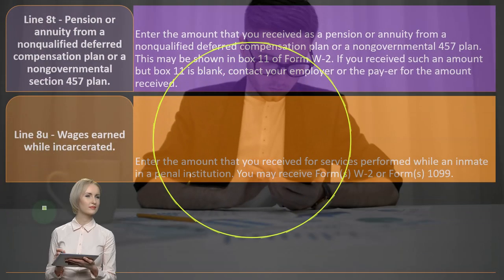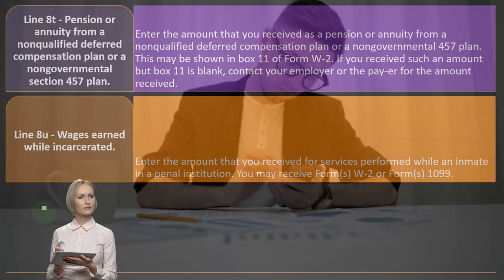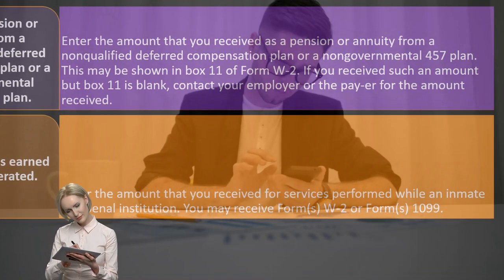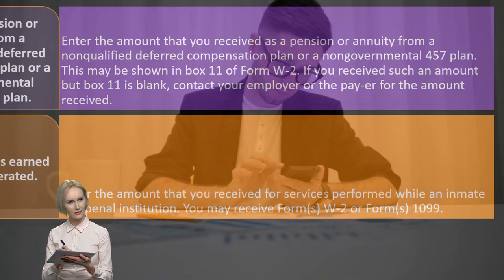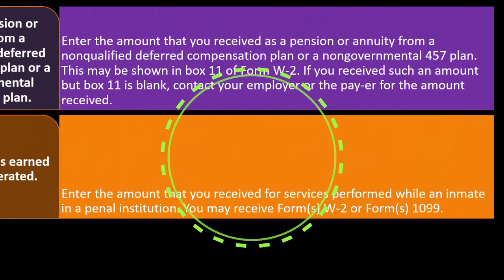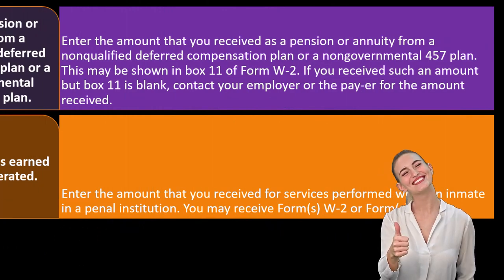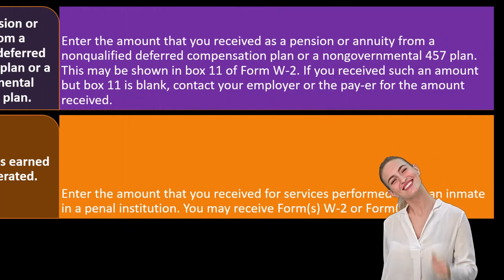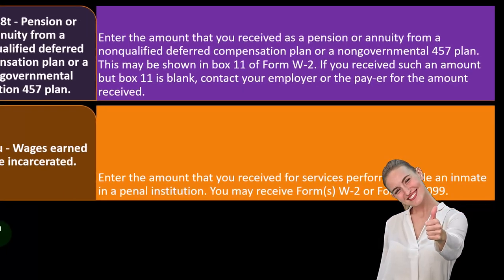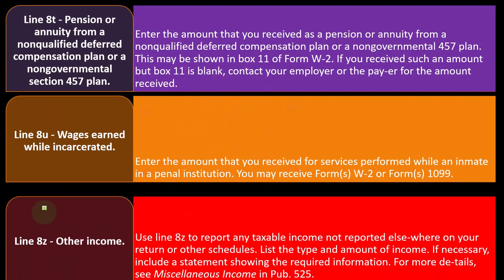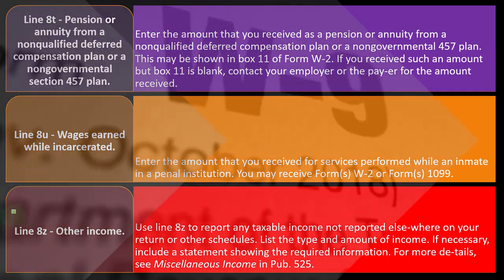Line 8U — wages earned while incarcerated. Enter the amount you received for services performed while an inmate in a penal institution. You may receive Form W-2 or Form 1099 for that. Hopefully you don't encounter this often, but if you do, line 8U is where it goes.